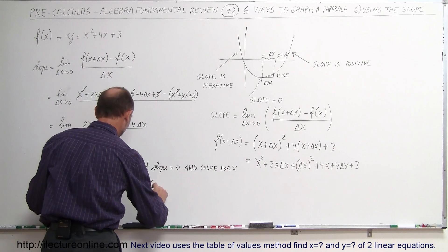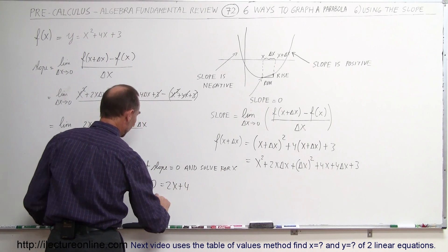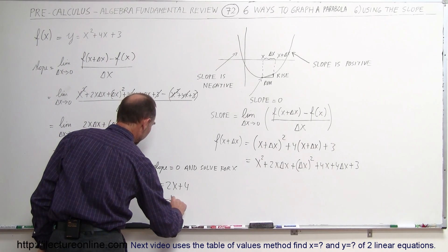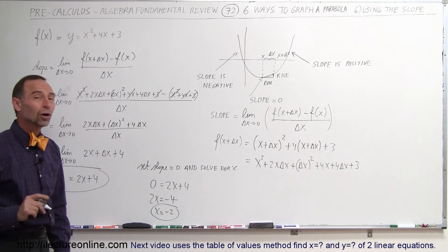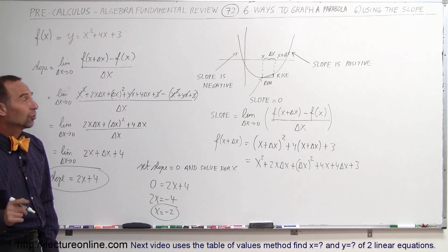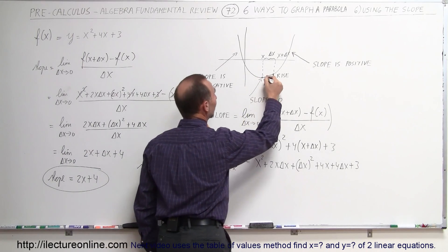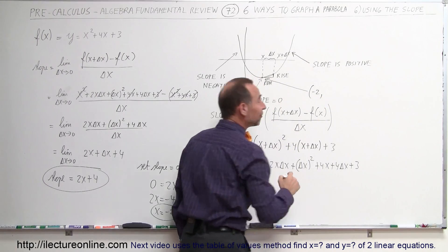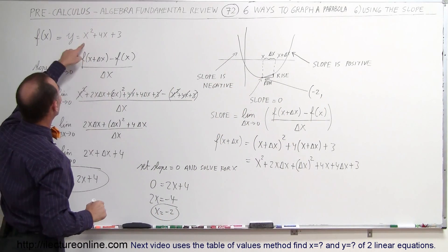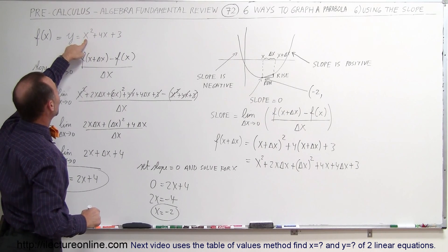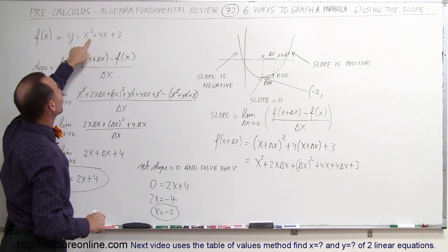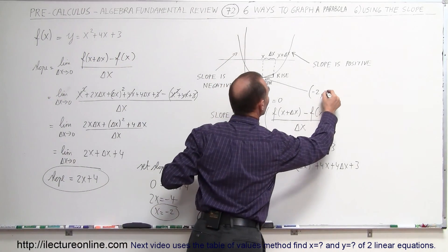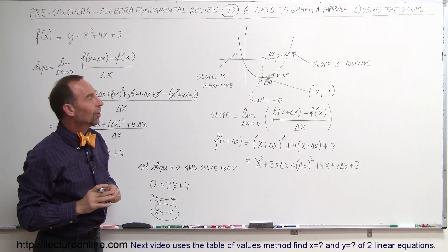Setting the slope equal to 0: 0 equals 2x plus 4, which means 2x equals negative 4, or x equals negative 2. So when x equals negative 2, the slope is 0 — that means x equals negative 2 is where I find my vertex. The x coordinate of the vertex is negative 2. To find the y coordinate, I plug x equals negative 2 into the equation: negative 2 squared is 4, 4 times negative 2 is negative 8, so 4 minus 8 is negative 4, plus 3 is negative 1. The y value is negative 1.